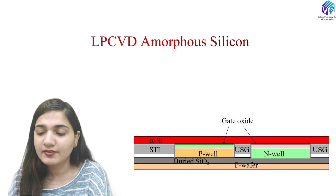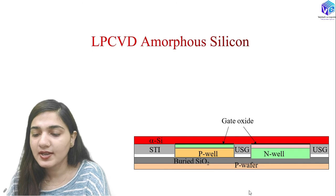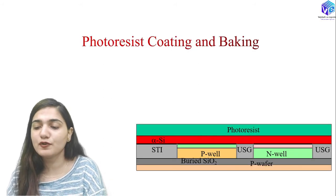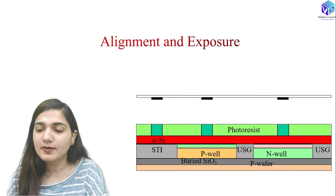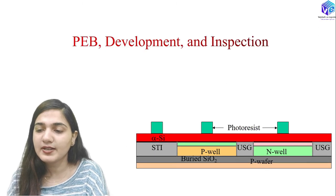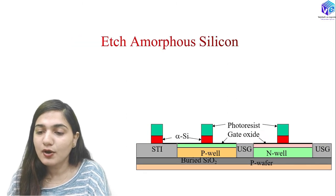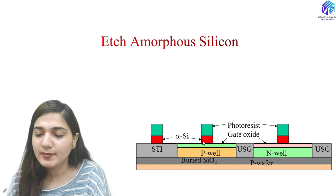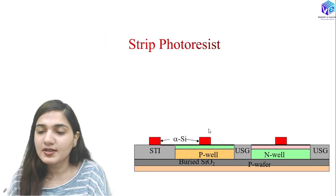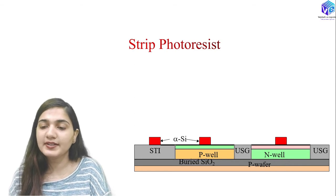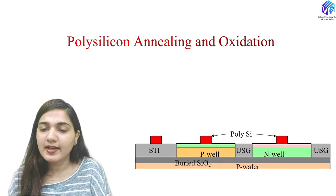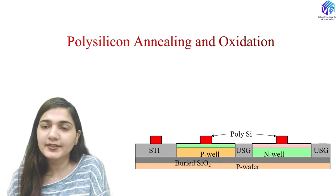We deposit amorphous silicon or polysilicon using the LPCVD process. Using the gate and local interconnection mask, we perform alignment, exposure, PEB development, and inspection to pattern the photoresist. We then etch out the polysilicon or amorphous silicon, strip the photoresist, and form the gates. After wafer cleaning, polysilicon annealing and oxidation are done so the polysilicon is not damaged and works well as the gate.